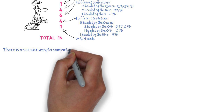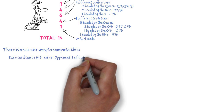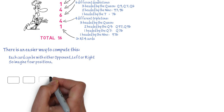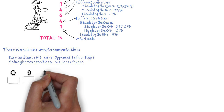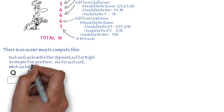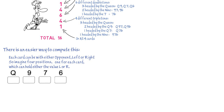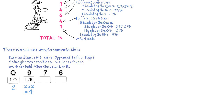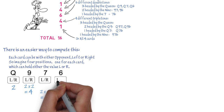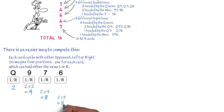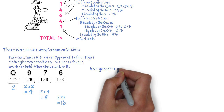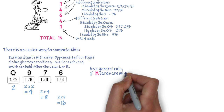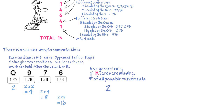There is, however, an easier way to compute this. Each card can be with either opponent — left or right. So imagine 4 positions, one for each card, which can hold either the value left or right. The first position can hold 2 values. The second position can hold 2 values for each value of position 1, and so on. Each position can hold 2 values for each value of the previous position. As a general rule, if n cards are missing, the total number of all possible outcomes is 2 to the nth power.